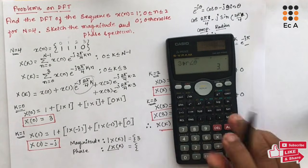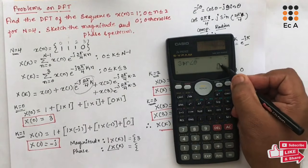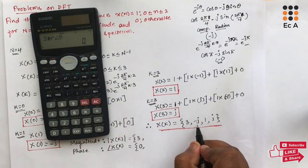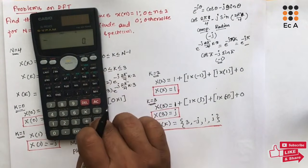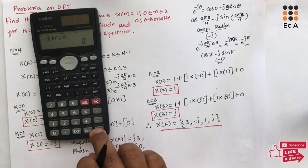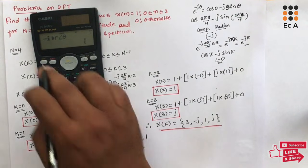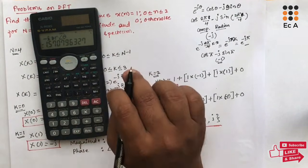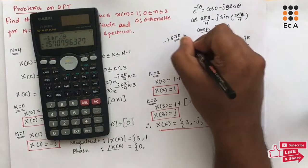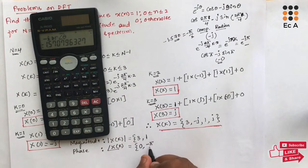The phase of X[0] = 3 is 0. Now let us calculate magnitude and phase for X[1] = -j. Enter -i in complex mode, and the magnitude is 1. Press shift equals and it shows -1.570, which is -π/2. So the phase is -π/2.